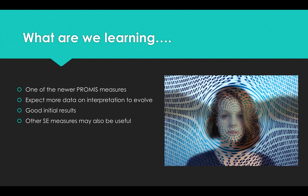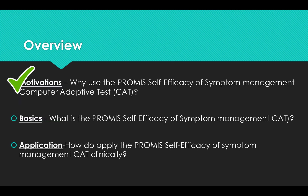So what we are learning: one of the newer PROMIS measures is self-efficacy of symptom management, and we expect more data on interpretation to evolve. Our initial results are positive — it's identifying many different people with problems in confidence and negative beliefs, and we're able to use it effectively to target psychosocial approaches to those patients. That concludes the basics of interpreting the PROMIS self-efficacy symptom management scale.